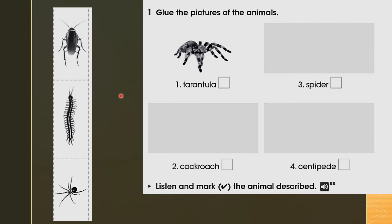Good, that was a very good description. Don't forget you can listen as many times as you need. You heard the description — please put a tick next to the animal being described. Remember you can pause the video and listen again as many times as you need. To recap: cut out the pictures, paste them next to their respective names, then listen and tick the animal described.